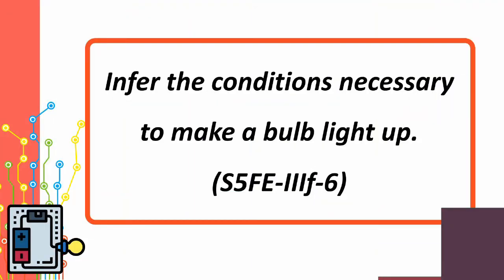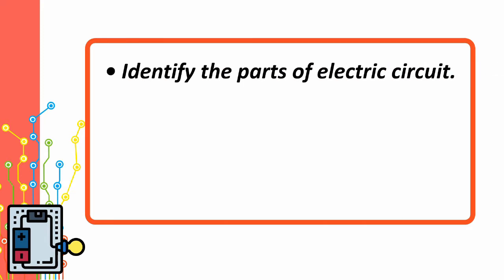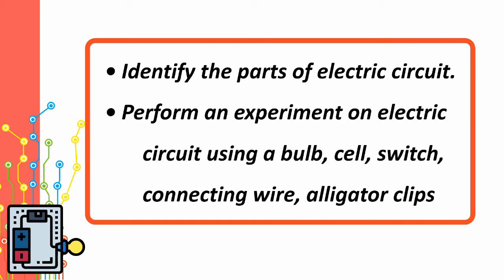In this week's lesson, we are going to infer the conditions necessary to make a bulb light up. Specifically, you are expected to identify the parts of an electric circuit and perform an experiment on electric circuit using a bulb, cell, switch, connecting wire, and alligator clips.